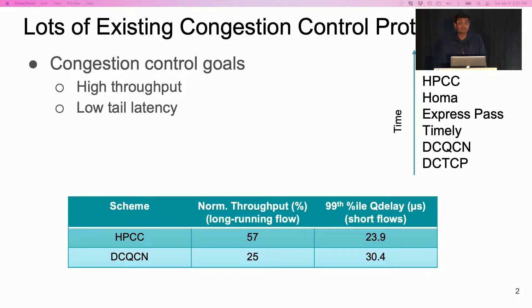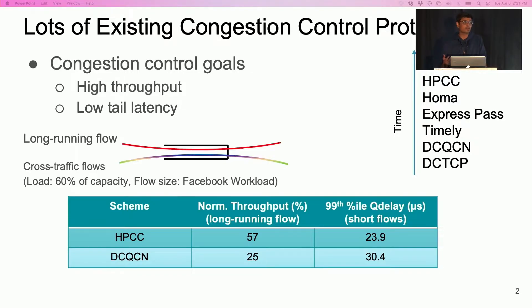As an example, this table shows performance of a few existing protocols in a simple simulation. The experiment consists of a single long-running flow competing against stochastically arriving cross-traffic flows at a 100 Gbps link. The average cross-traffic load is 60% of the link capacity.